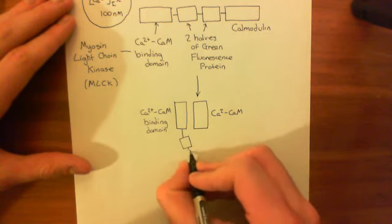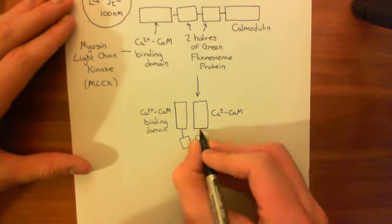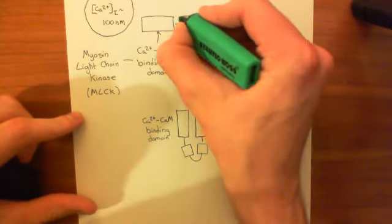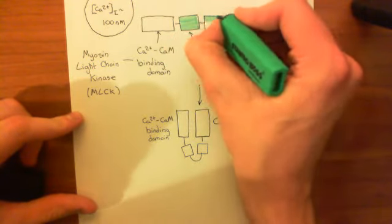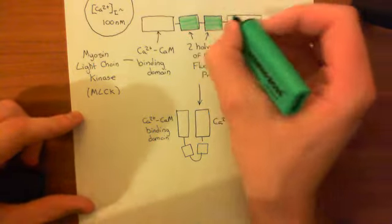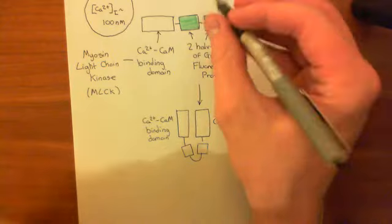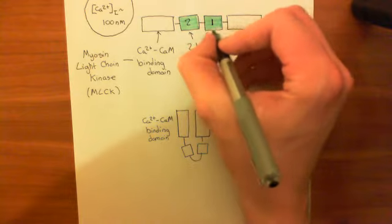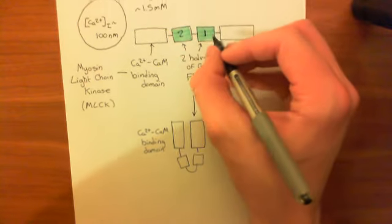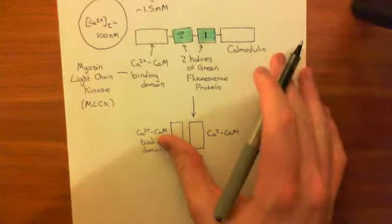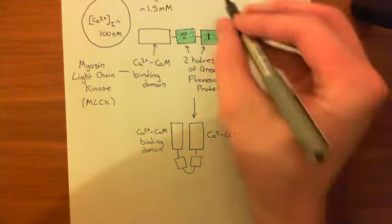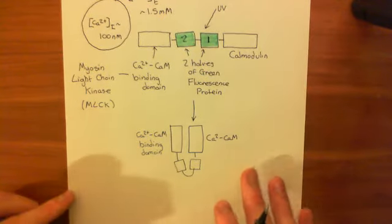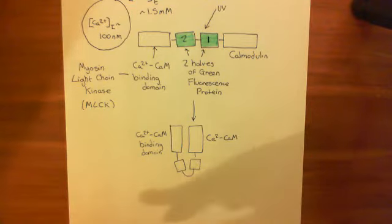So we have the two halves of green fluorescence protein. At the moment, when it's in this resting state, the green fluorescence protein is split into two and it's not functional. So if I shine UV onto this original protein, I do not get green coming back at me - I can shine UV on here and get absolutely no response. So the green fluorescence protein in this state is not functional.